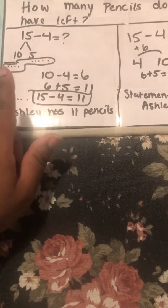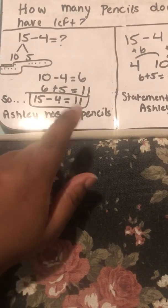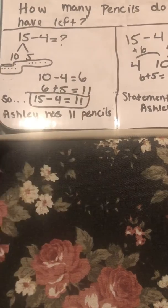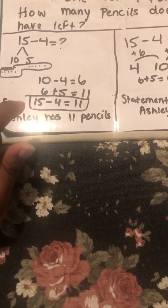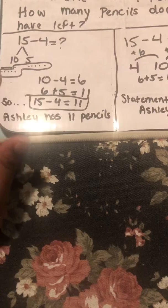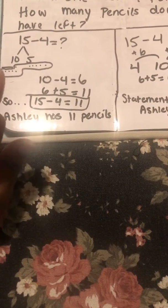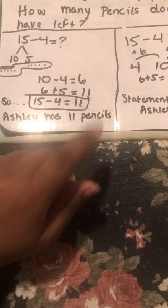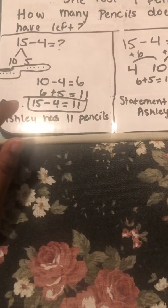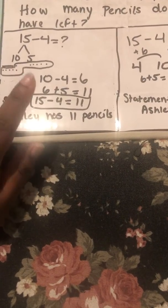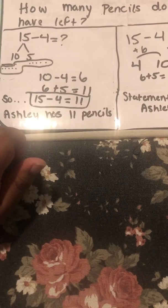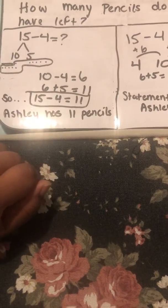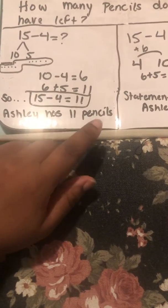On the other side you have 5, so you add 6 and 5 which gives you 11. So if 6 plus 5 equals 11, and we're trying to figure out 15 minus 4, the answer would be 15 minus 4 equals 11.